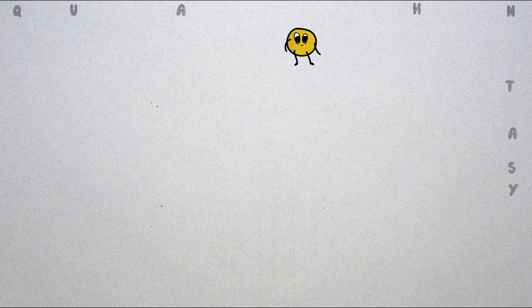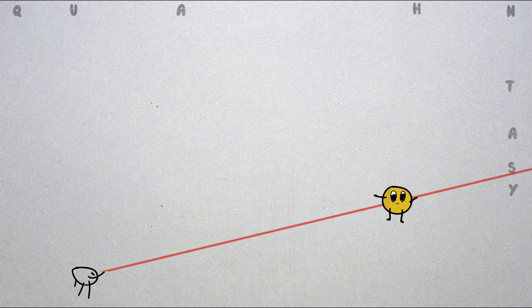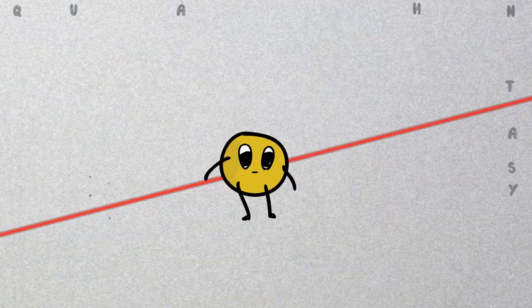Optical tweezers use a laser beam to physically hold and move microscopic objects. They can trap and manipulate small particles. But the question is how?